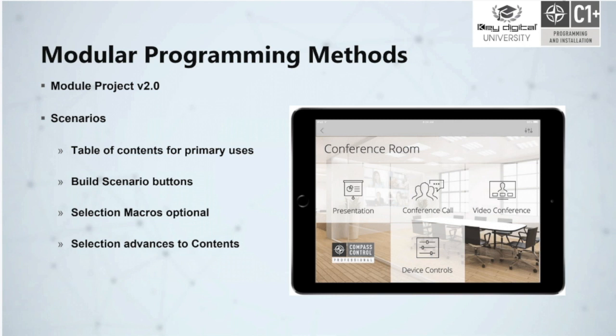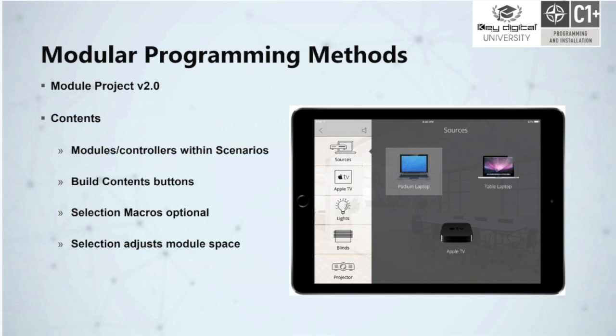However, some scenarios should have a selection macro. For example, if I were to press the Presentation button here, perhaps I, the programmer, decide it's in my client's best interest to make it most convenient for them — the projector should turn on, the screen should drop down, the presentation switcher should select a default source, etc. And by selecting that scenario, it advances to the contents and module space view, where we now see the contents on the left-hand side — that light gray list — where we are able to provide our user with the controllers or modules that should be available within each scenario.